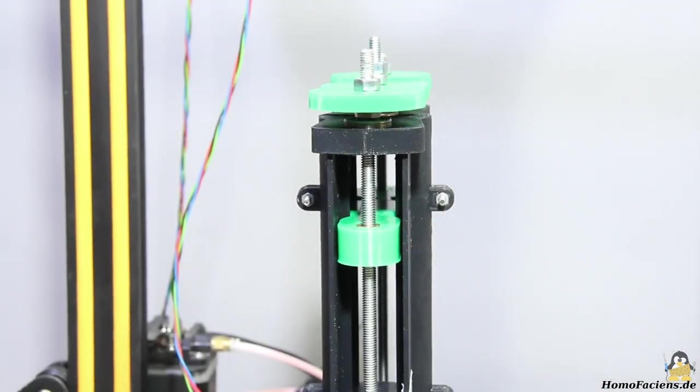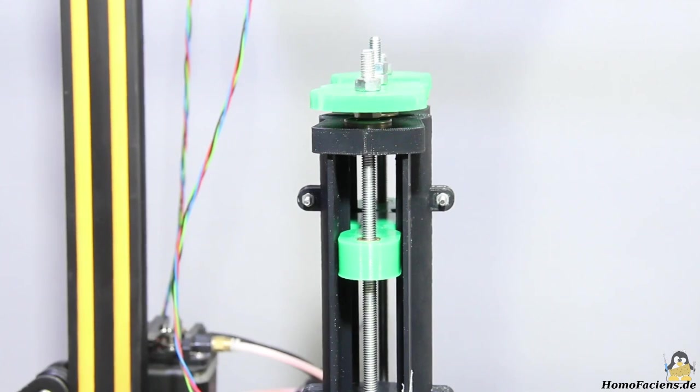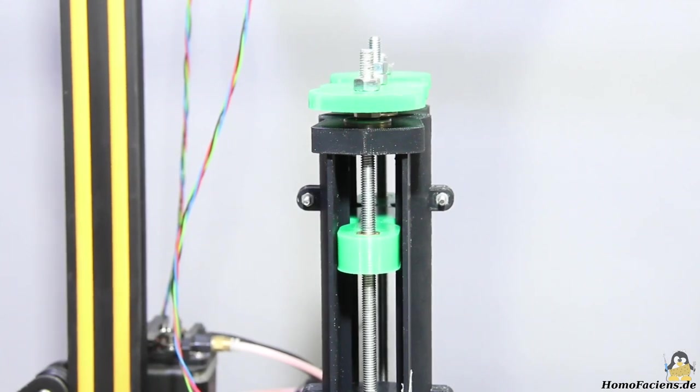In contrast to Rigid's design, the piston of the syringe is not driven by a toothed belt, but by two threaded rods. The threaded rods prevent the piston from moving up again when the extruder motor is switched off. The system is self-locking.